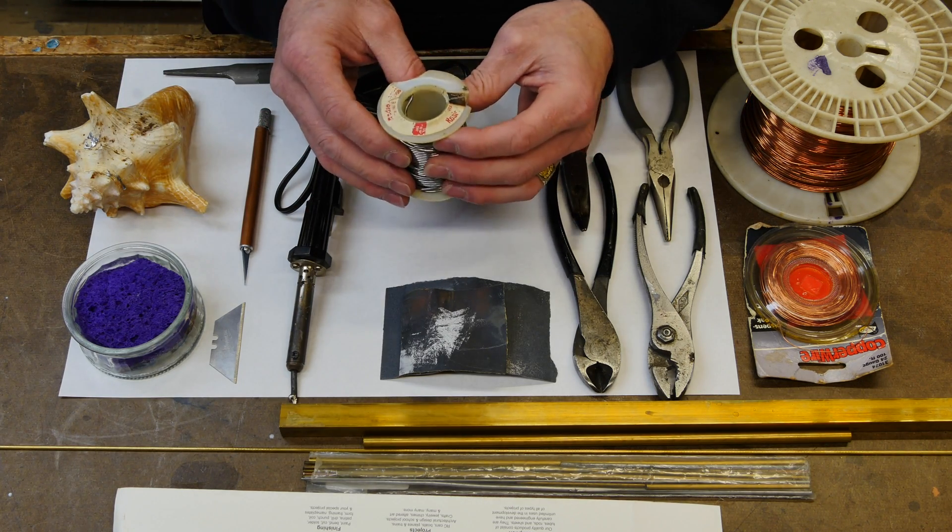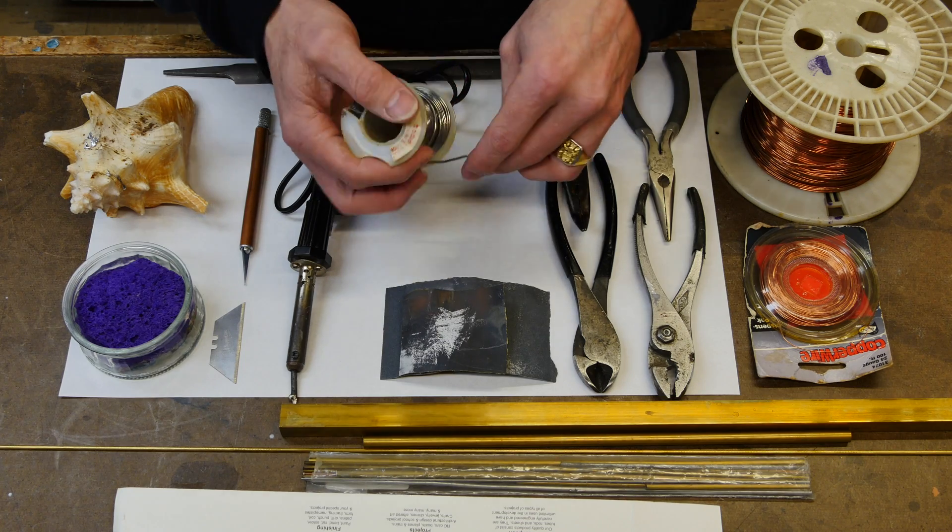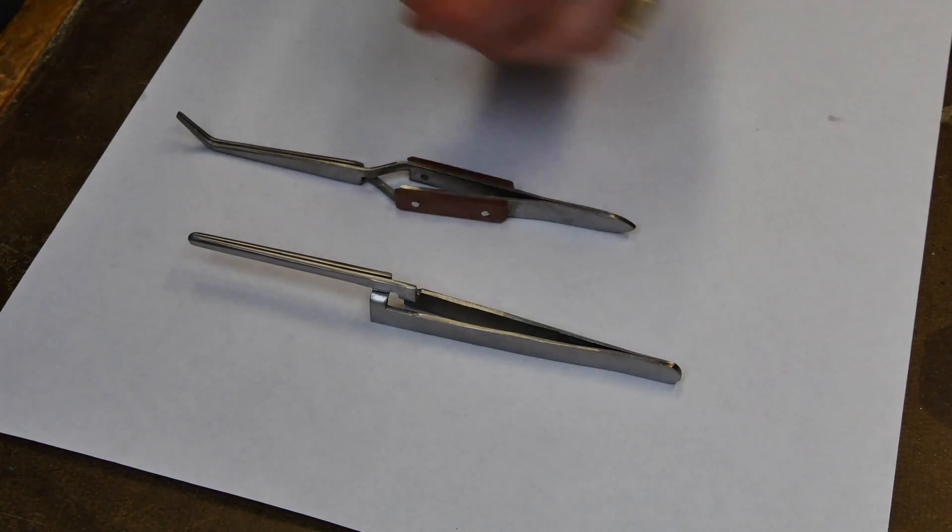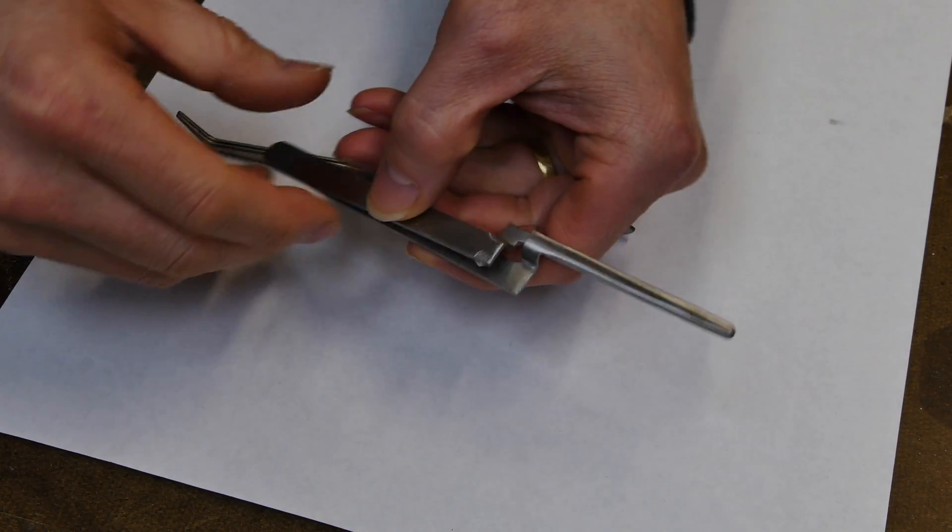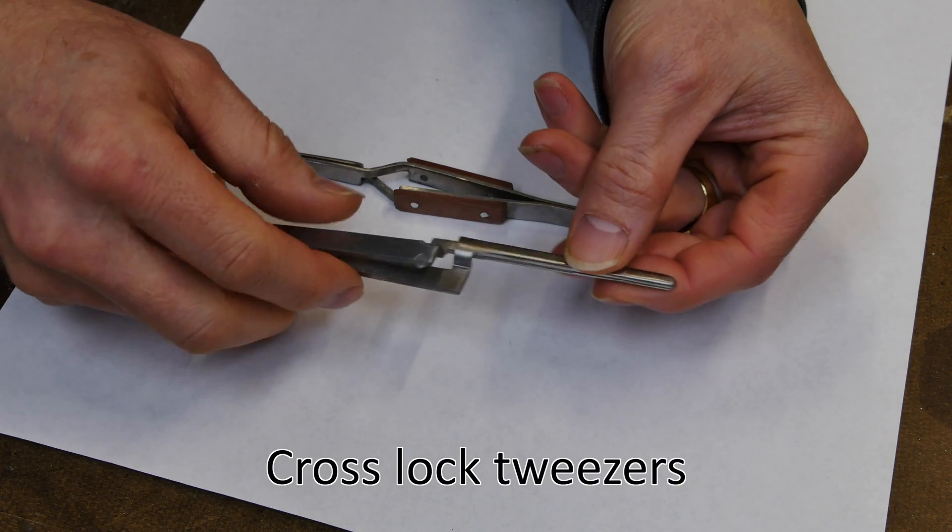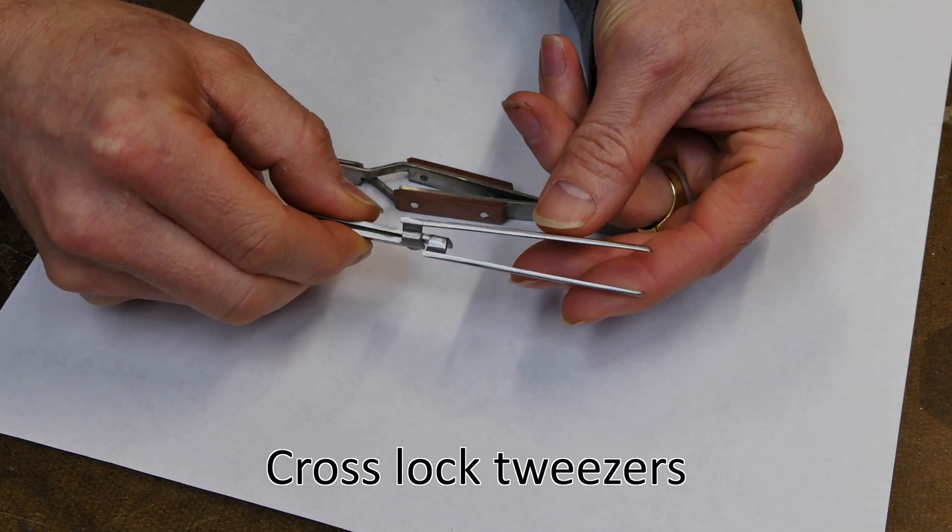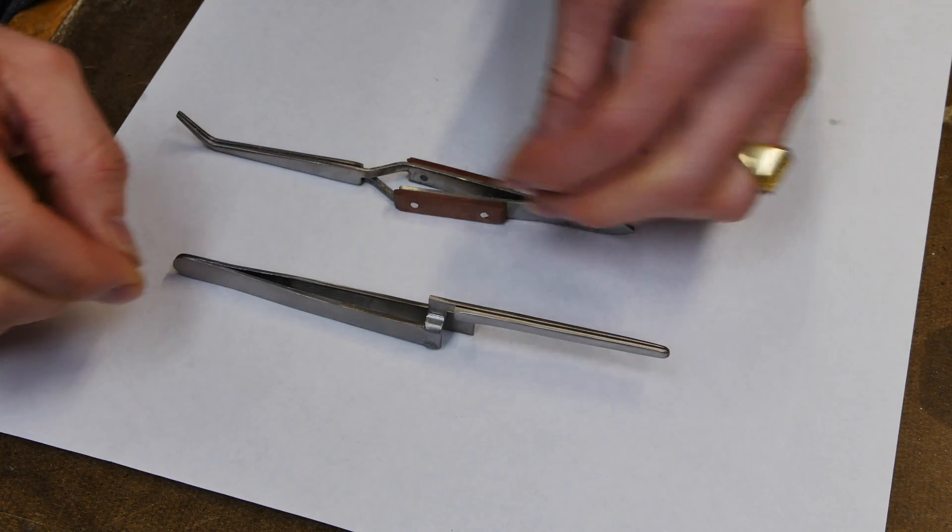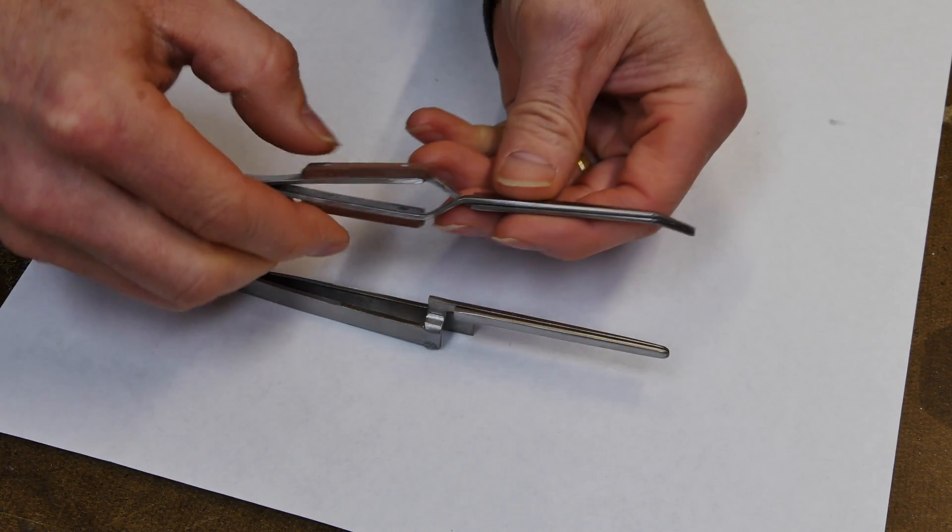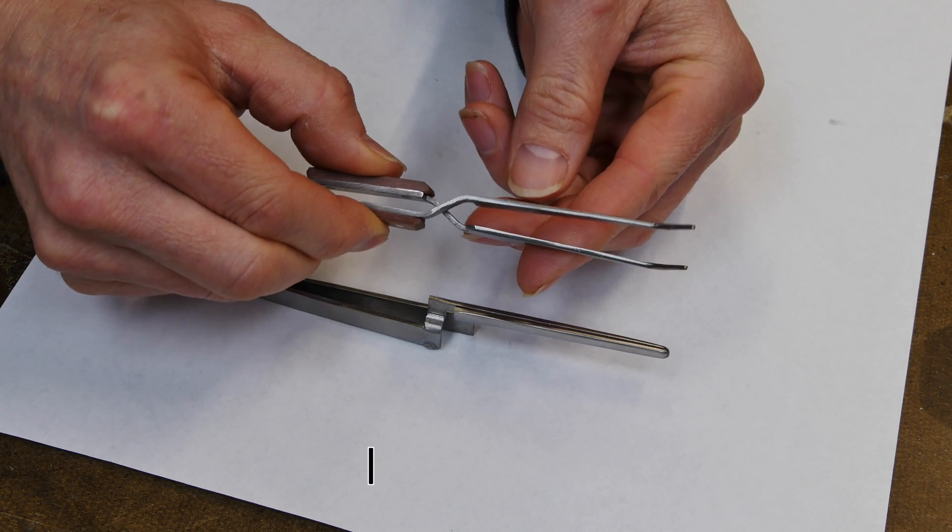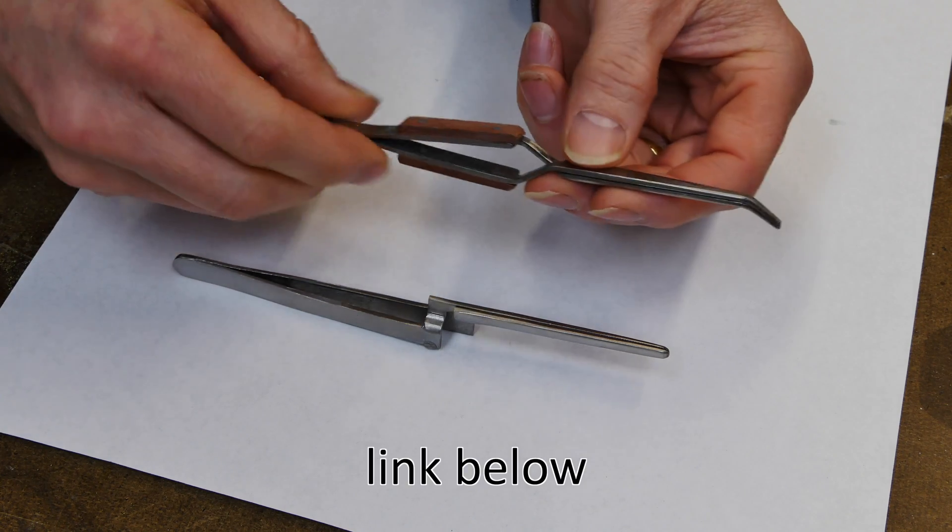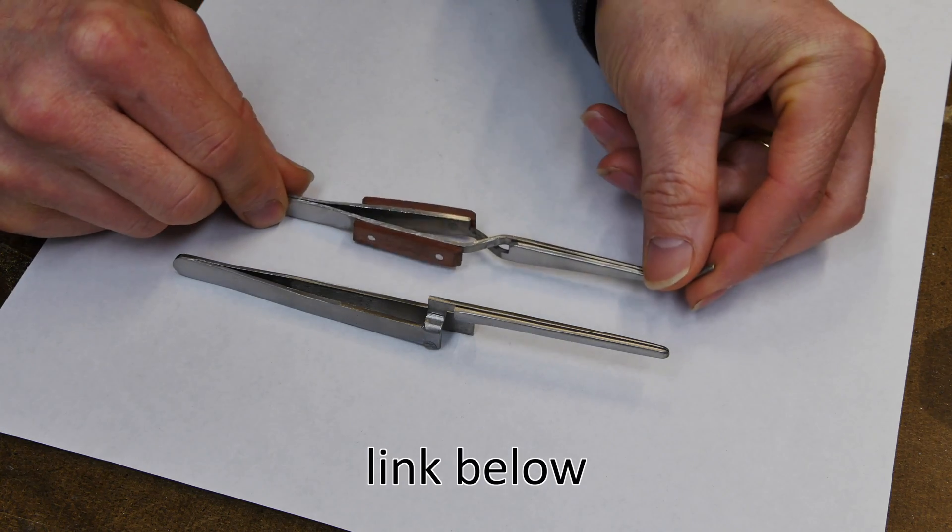And then rosin core solder, which is the key to the whole thing. Two of the other pretty important tools that I use are these jewelers cross lock tweezers. You can buy these super cheap at a local jewelry store or Amazon or eBay, but they come in super handy and you'll see me use them very often in this video, just to hold the metal because it does get very hot so I don't burn my fingers.